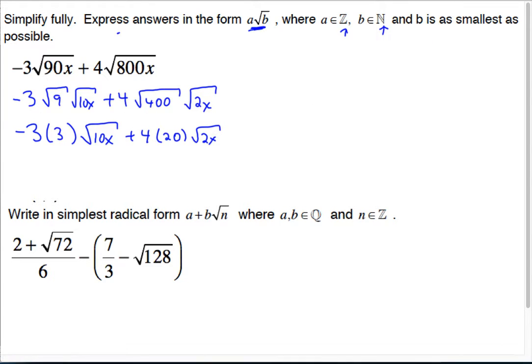It's important to recognize that this here and this here are not like terms. We cannot collect them. However, we can take these numbers and multiply them together. So you have negative 9 square root of 10x plus 4 times 20, which is 80 square root of 2x.